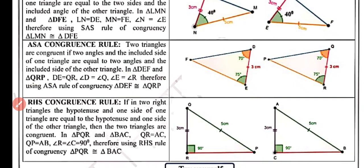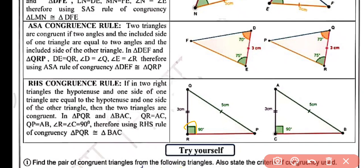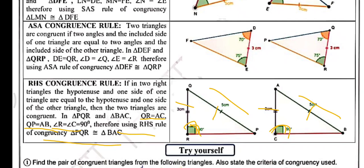Now the next rule is the RHS rule, that is Right angle-Hypotenuse-Side. If two triangles have a right angle, and the hypotenuse — that is, the side opposite to the right angle — and one other side are equal, then the triangles are congruent. Here QR equals AC, hypotenuse QP equals AB, and right angle at R equals angle C. So in triangle PQR and BAC, by using the RHS rule, triangle PQR is congruent to triangle BAC.